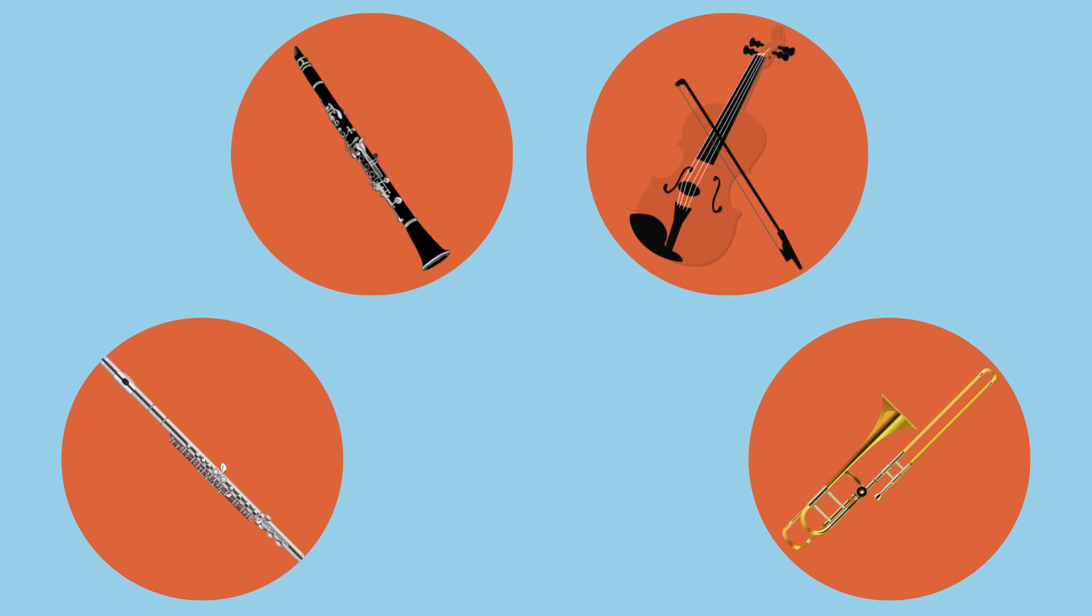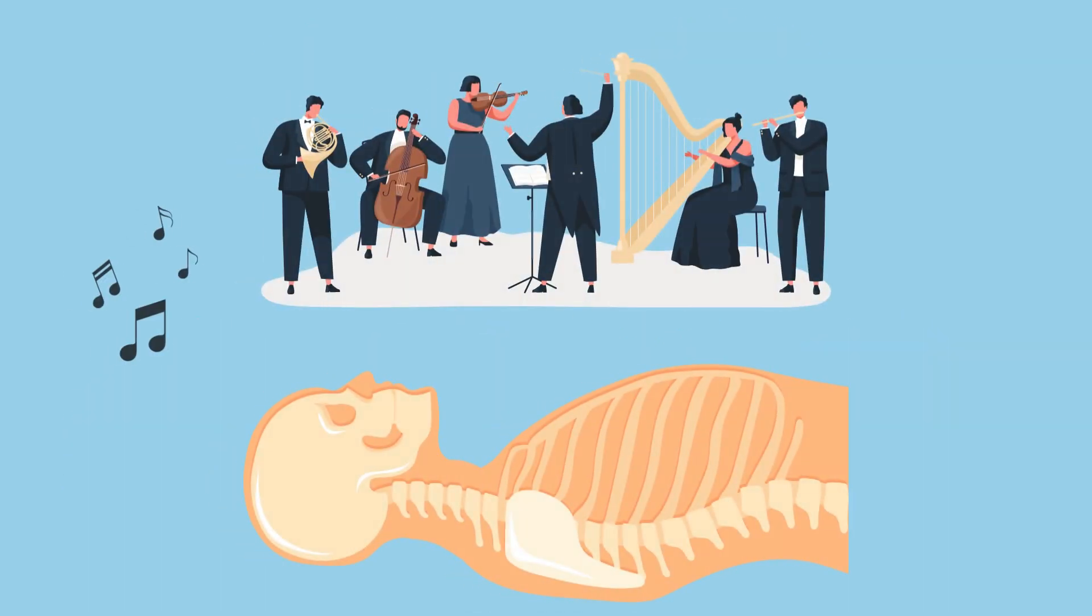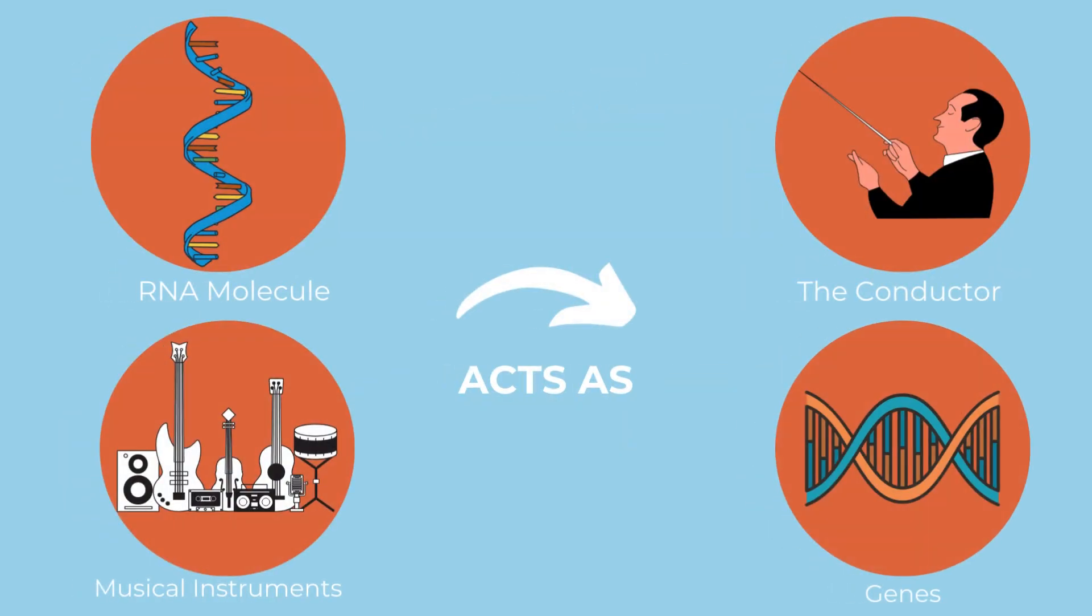These instruments work together to create a beautiful symphony under the direction of a conductor. Now, I want you to think of the human body as this orchestra. Ribonucleic acid, known as RNA, is the conductor, and the musical instruments are our genes.